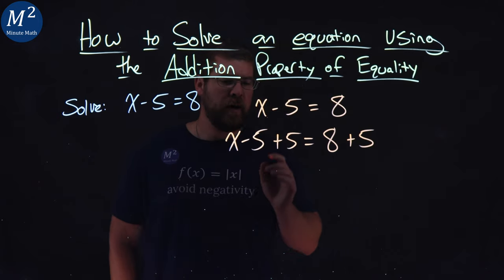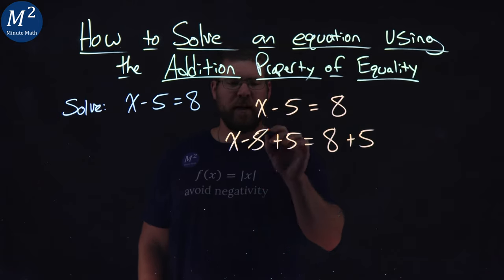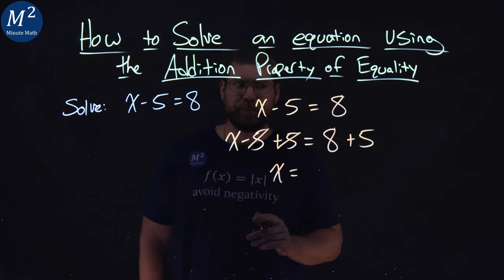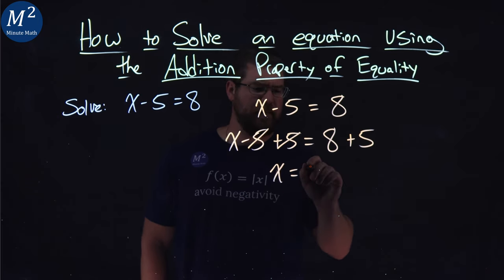From there, we want to simplify. Well, negative 5 plus a positive 5 cancels out to be a 0, so we have x by itself right here. 8 plus 5 is just a 13.